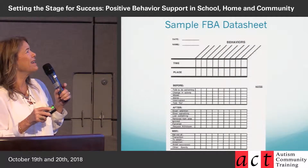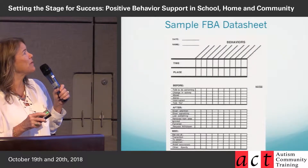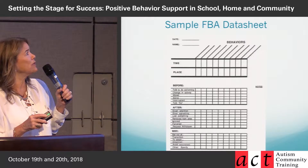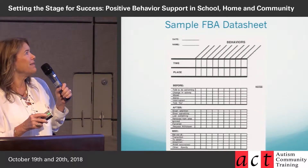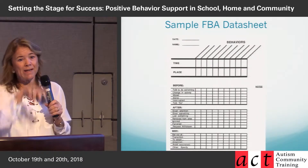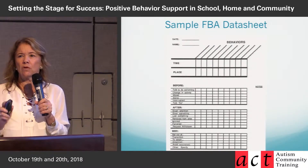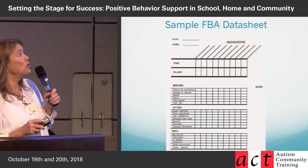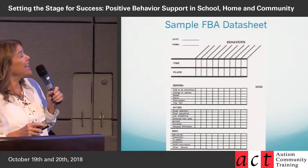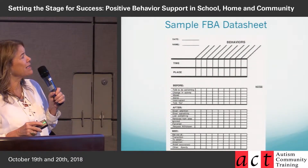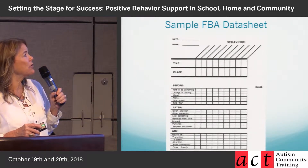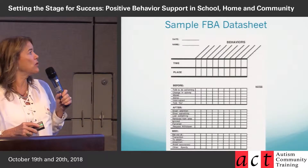These are pretty common things that might be antecedents before disruptive behavior: being told to do something, a change in activity, movement, being alone. Disruptive behavior often doesn't happen when alone, but every once in a while you'll see a child who bites himself when alone — more of a self-stimulatory or repetitive behavior taken too far. Being told no is a common one. What happens after that and maintains it: the child getting attention, given something, losing something, being removed from the area, ignored, punished, or the request being withdrawn.